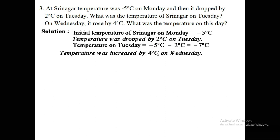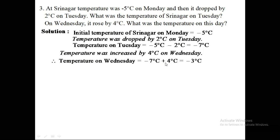On Wednesday the temperature rose by four degrees Celsius. The temperature on Wednesday is the Tuesday reading plus the increase: minus seven degrees Celsius plus four degrees Celsius. Since we have one negative and one positive number, opposite signs are subtracted: seven minus four equals three. The sign of the larger absolute value (minus seven) is carried, so the temperature on Wednesday is minus three degrees Celsius.